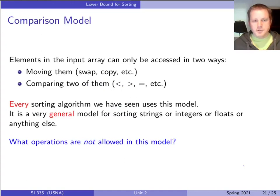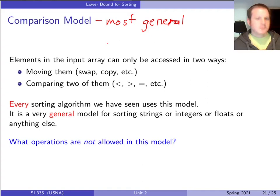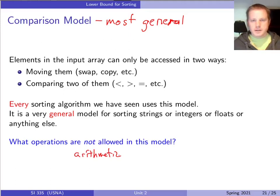That model we're going to use is called the comparison model. This is the most general model that we know about for sorting. There are other ways to think about sorting problems or models that are not the comparison model. The difference is that the comparison model can sort anything, because all you are assuming is that we can move things around and we can compare items — like less than or greater than. For other kinds of models, maybe you assume that you can do even more than that.